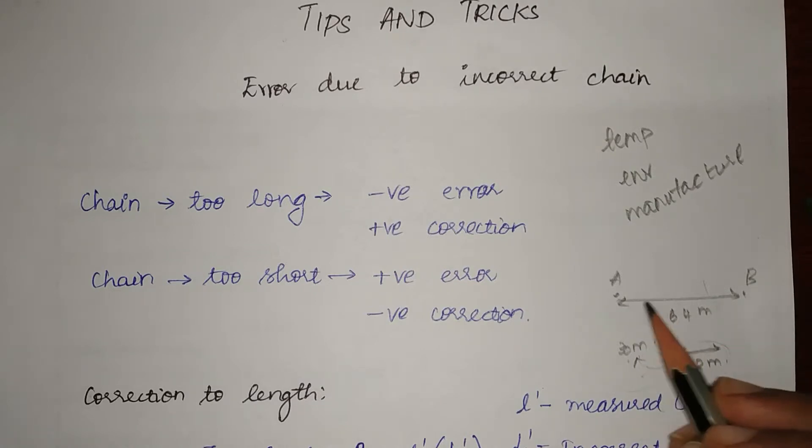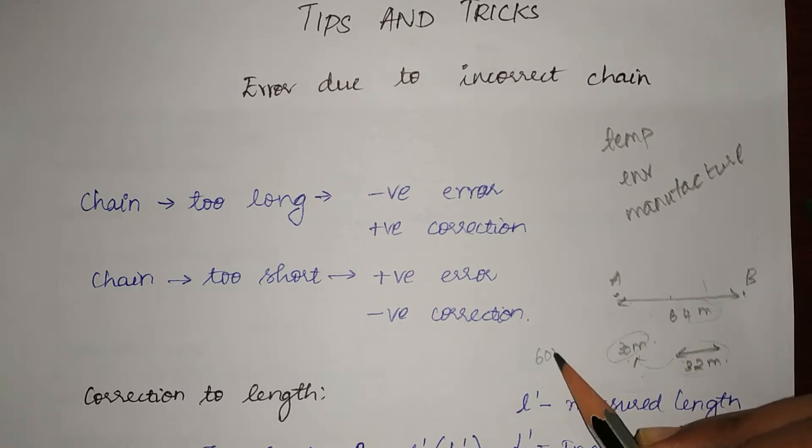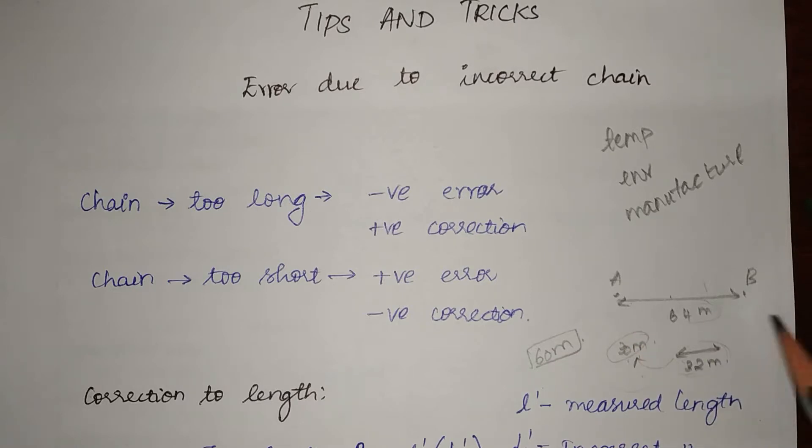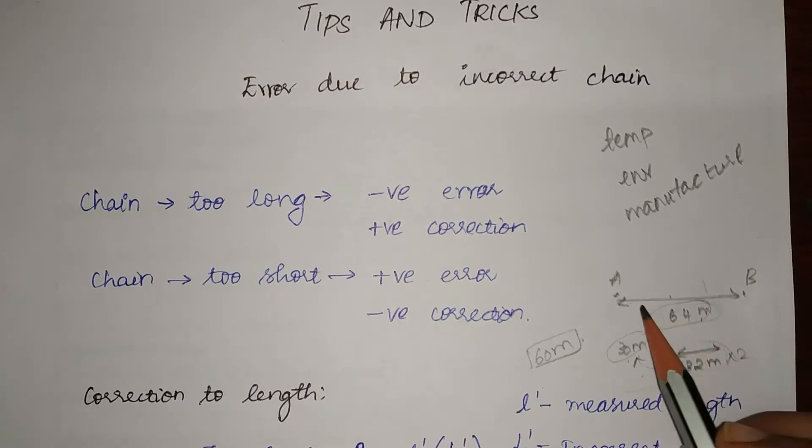So when I am using this 32 meter chain which I think is 30 meters, this 64 meters will be covered by two chain lengths. So I will enter the value of 60 meters as my distance between A and B, but in actual it would have been 32 meters times 2 which is 64 meters. So 64 meter distance is entered as 60 meters.